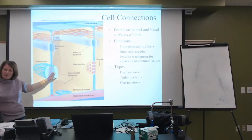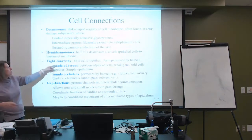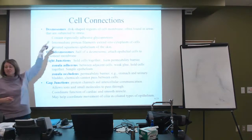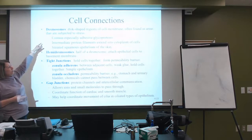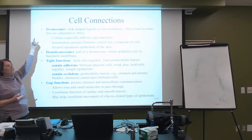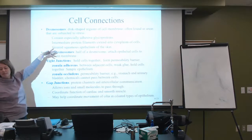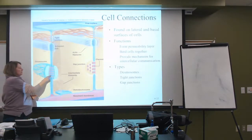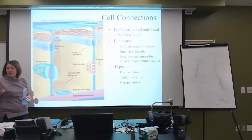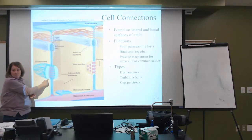Desmosomes are disc-shaped structures of the cell membrane, often found where there might be stress on the cell. They have adhesive glycoproteins — glyco meaning the carbohydrates — so the carb chains are represented in between the cells.